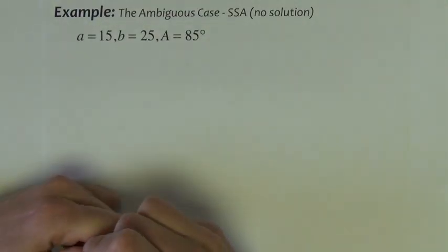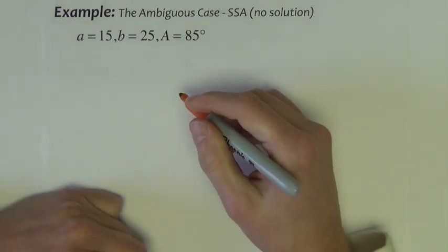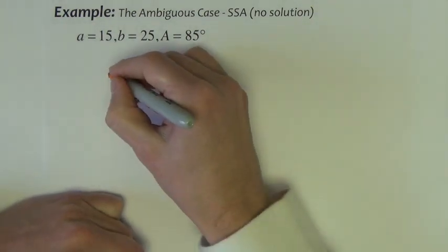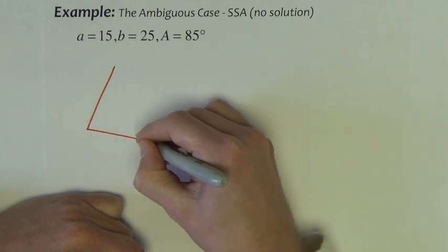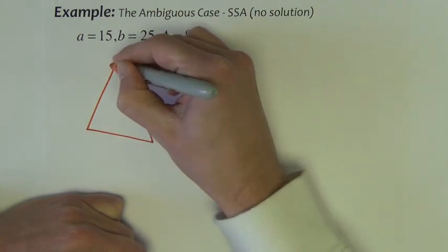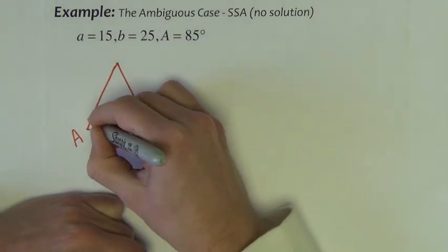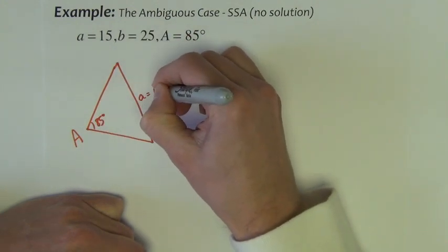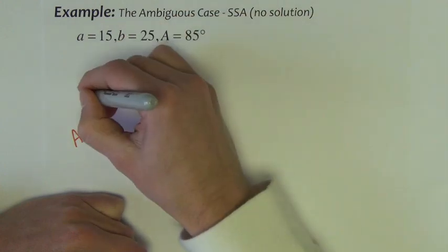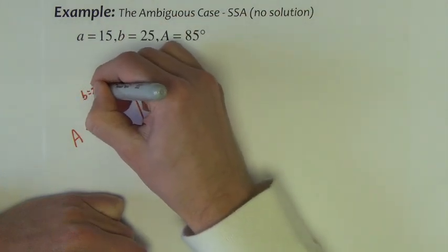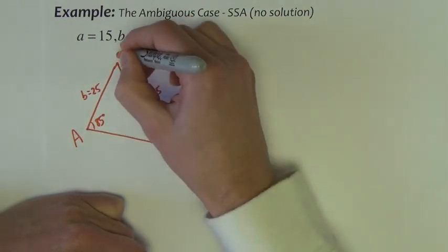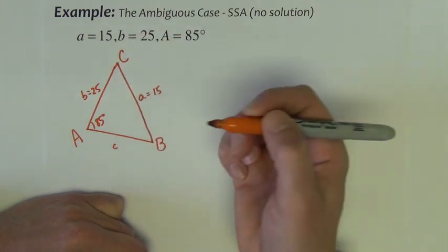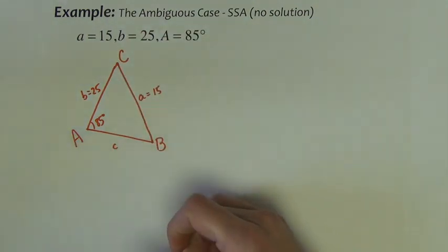Let's try one of these side-side-angle ambiguous case problems that has no solution and explain why it has no solution. So again, I draw my triangle. Let's just call this A, 85 degrees. So this is little a, 15. Let's just put little b here, 25. So this is capital B and this is capital C, little c.